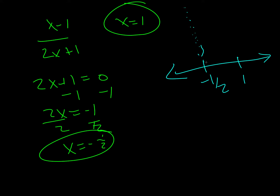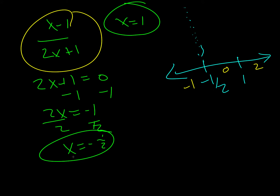The way this shows up on a sign diagram: we have 1, which is a root, and then we have negative 1 half, which is an asymptote — so you just draw it like that. We need to figure out where it's positive and where it's negative, so we're going to choose numbers that fall into these different regions. We want a number between negative 1 half and 1 — 0 is probably the best choice. Then 2 would be greater than 1, and negative 1 would be less than negative 1 half. We're going to plug those into the original and see what we get.